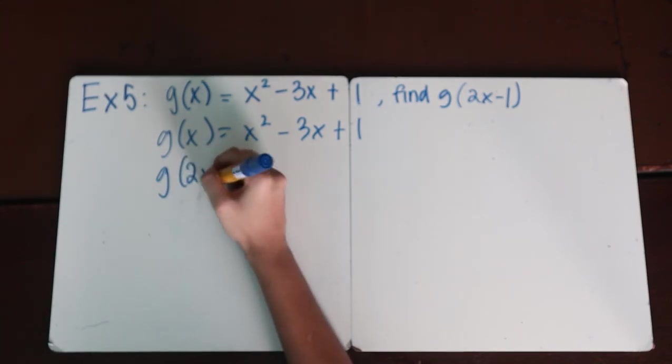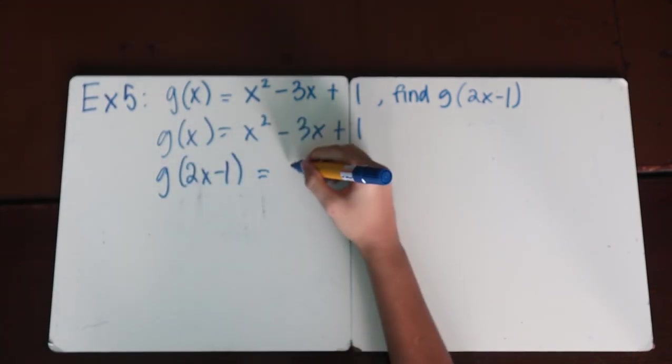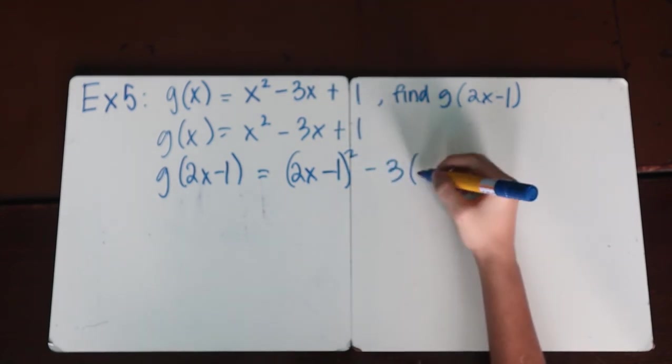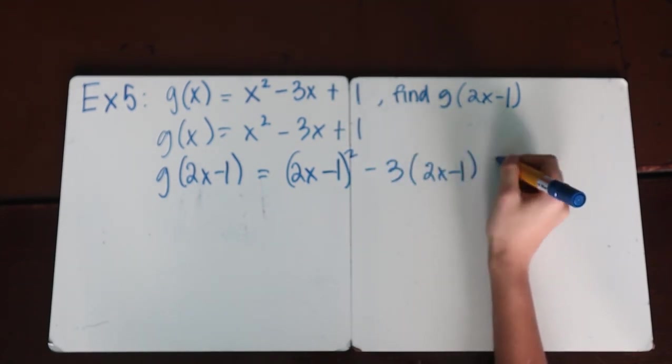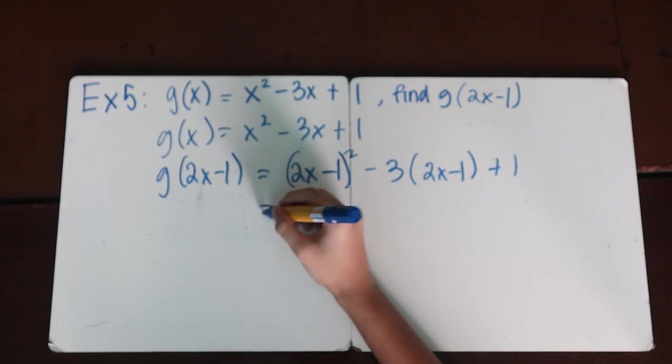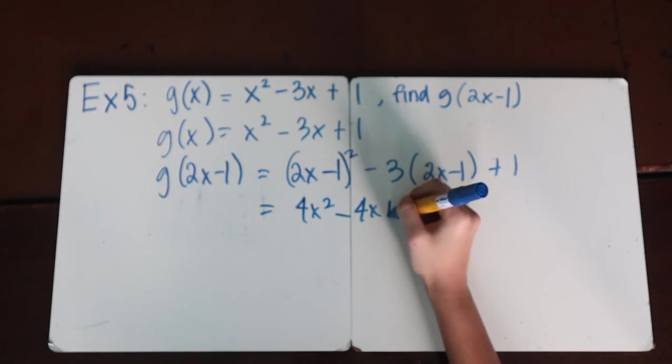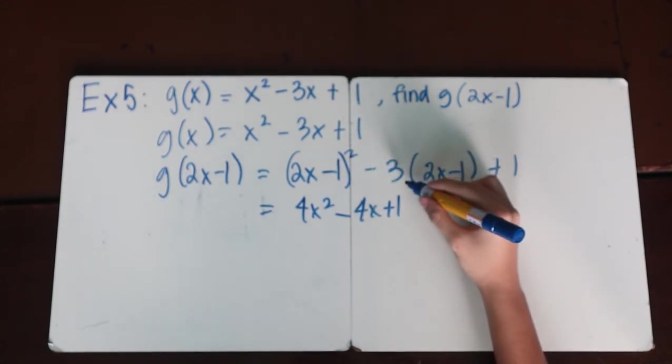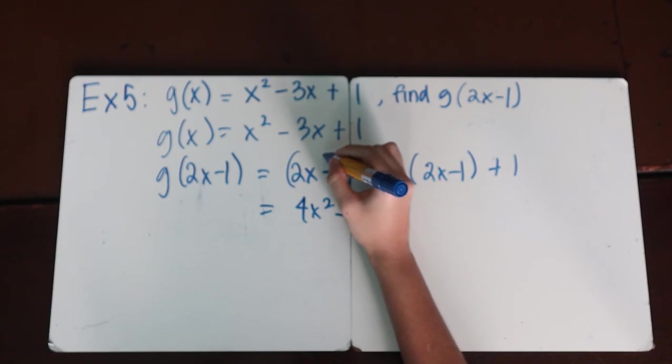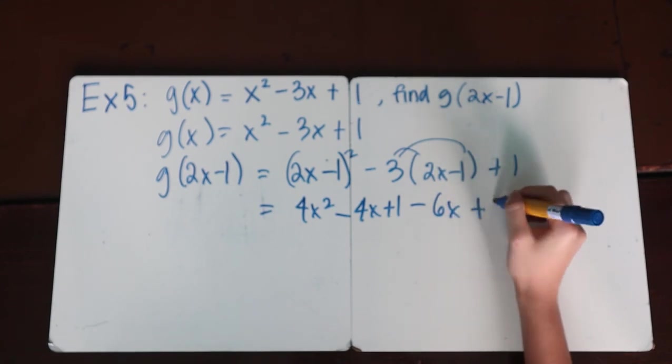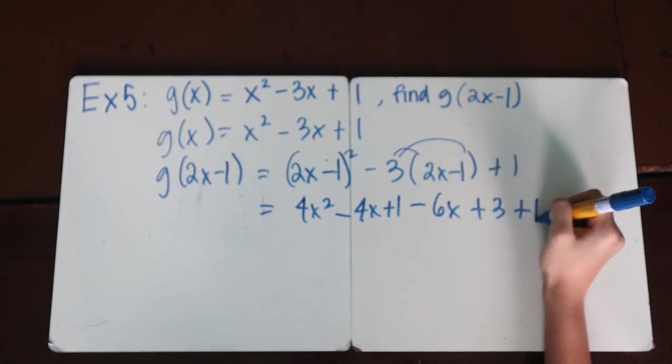So g(2x - 1) equals (2x - 1)² - 3(2x - 1) + 1. Then we'll simplify by squaring, so that would equal 4x² - 4x + 1. You would do the FOIL method with the binomials here, but then here you would just distribute, so that would be minus 6x + 3 + 1.